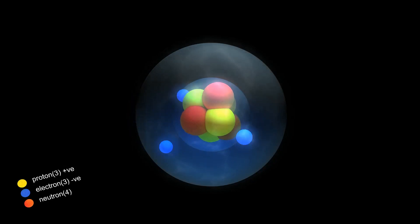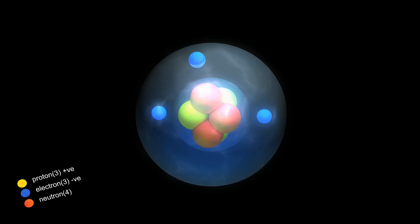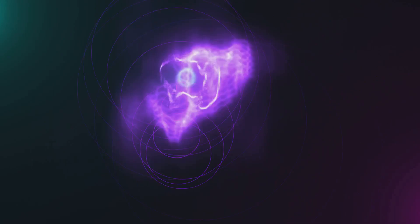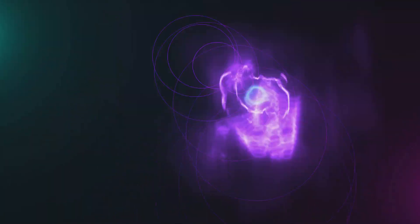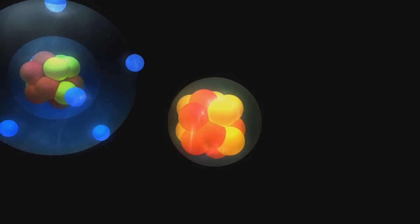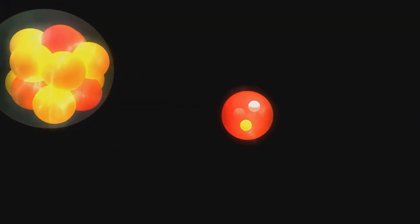These colors, however, have no relation to the colors we perceive. They are merely labels to represent this unique quantum property. Gluons, true to their name, act as the glue that holds these quarks together. These force carriers flit between quarks, exchanging color charge and mediating the strong force.